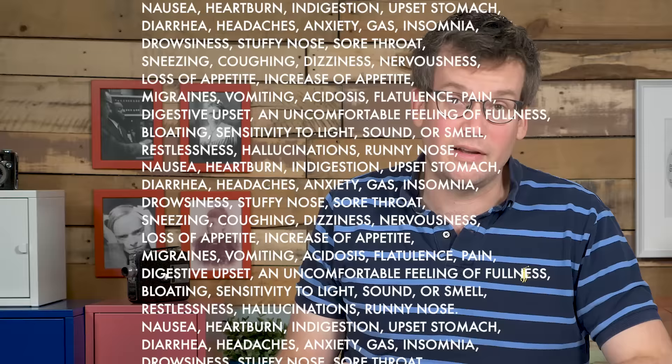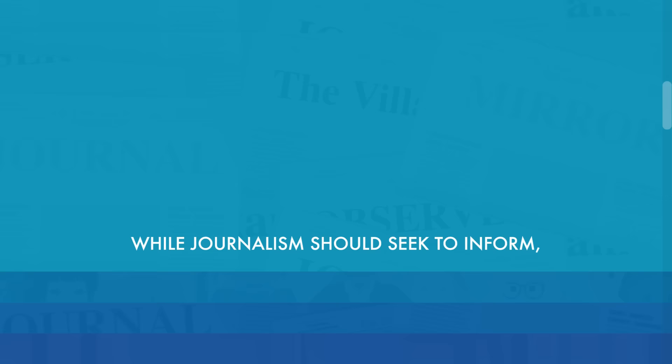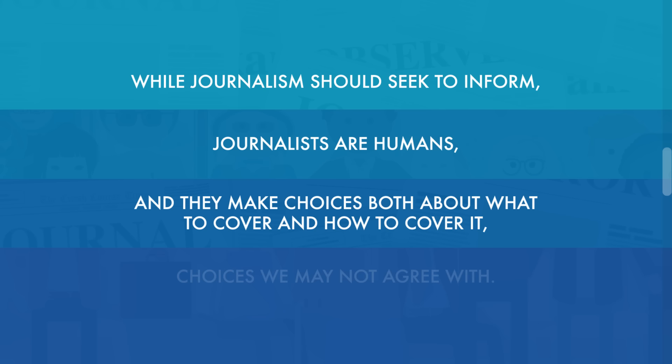Advertisements often feel informative, and sometimes seek to be informative, like those medicine ads that list 143 side effects in 10 seconds because they are required to do so by law. And while journalism should seek to inform, journalists are humans, and they make choices both about what to cover and how to cover it, choices we may not agree with. Movies and books may exist to entertain and enlighten, but they can also exist to sell things. It's no coincidence, for instance, that everyone in the Fault in Our Stars movie uses Apple products.